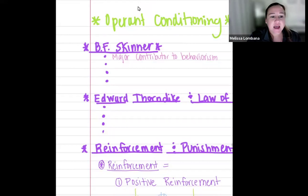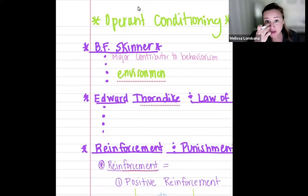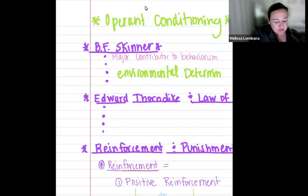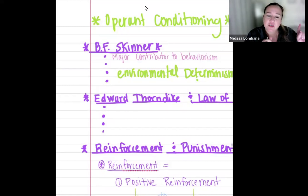He also believes that our behaviors are results of what are called environmental determinism. Environmental determinism basically means that our behaviors are a result of the interaction with our environment. Our environment determines our behavior — it's the interaction with our environment that dictates what our behavior will be.